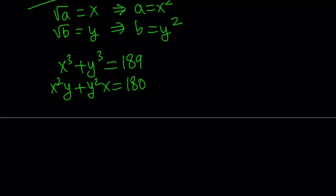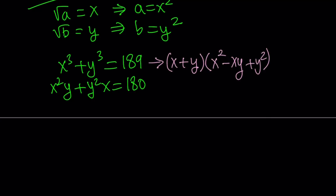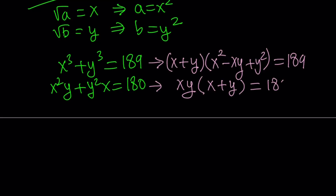Here's what we're going to do for our first method: we are going to factor the top equation and the bottom one. The first one, if you factor using the sum of two cubes formula, gives us x plus y multiplied by x squared minus xy plus y squared, equal to 189. The second one — you just take out a common factor of xy, and inside the parentheses you get x plus y, equal to 180.